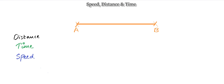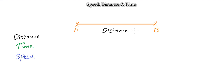Hello and welcome to SNMB Academy. In this presentation I'll be going through speed, distance and time. On the screen you can see two points A and B and the three terms: distance, time and speed. Starting with distance, it's just the length between the two points — from point A to B — and that would be the distance between the two points.